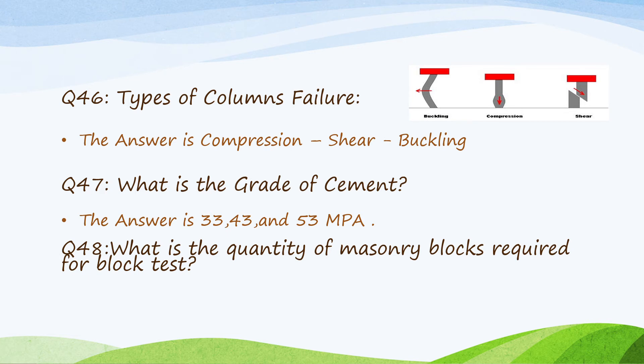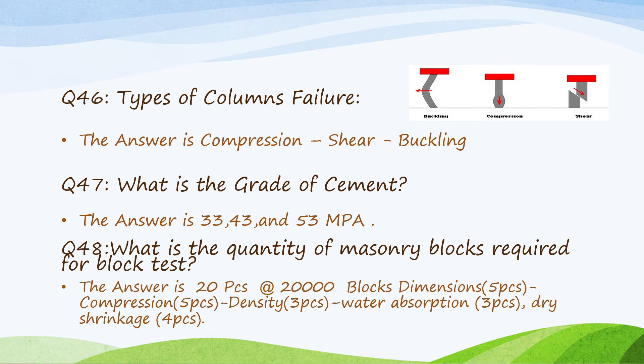Question 48: What is the quantity of masonry blocks required for block testing? 20 pieces every 20,000 blocks: 5 pieces for dimensions, 5 pieces for compression test, 3 pieces for density test, 3 pieces for water absorption test, and 4 pieces for dry shrinkage test.